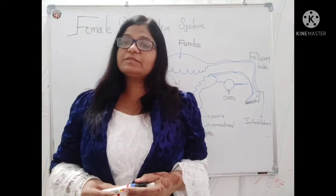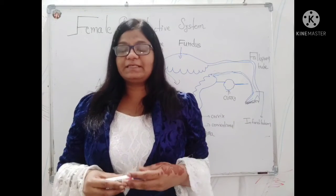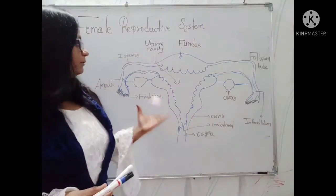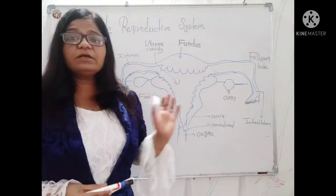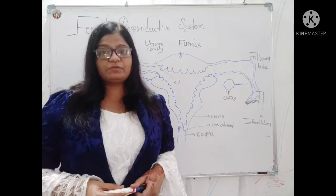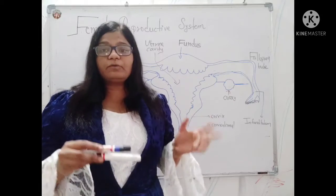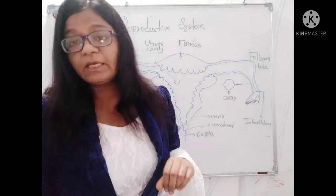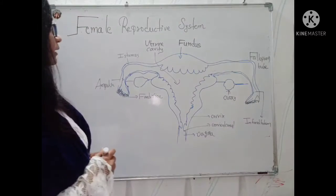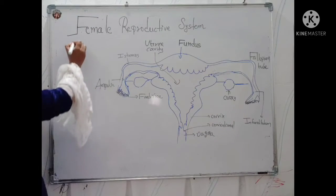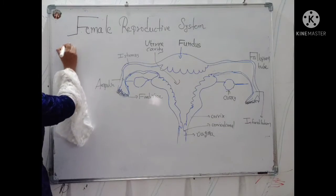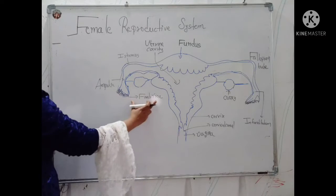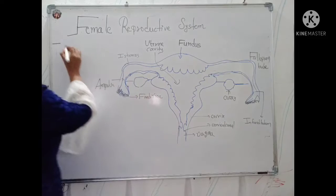The Female Reproductive System is made up of primary and secondary sexual organs. I have made a diagram which is a rough representation of the female reproductive system. If we go into the detail of each and every organ, we can list them as primary sexual organs and secondary sexual organs. In the primary sexual organs, there will be the pair of ovaries.